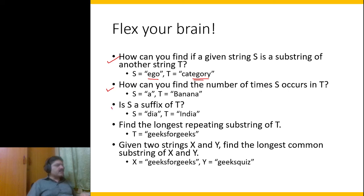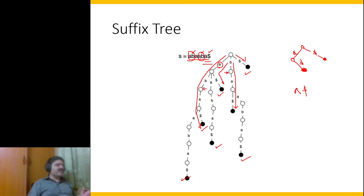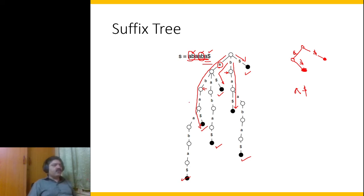Now the third question: is s a suffix of t? This is perhaps the easiest of all. If something is a suffix, then that path in the suffix tree should end with a dark circle. For 'aba', the path ends with a dark circle because we appended a dollar — so we find 'aba$' ending with a dark circle, confirming it is a suffix. That follows directly from how we constructed the suffix tree.